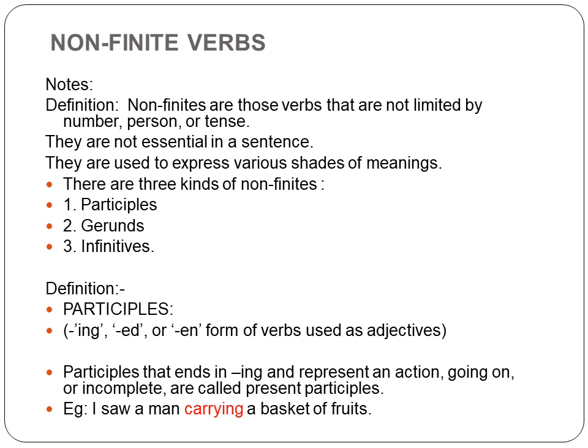What is a participle? A verb which ends with -ed, -ing, or -en is used as an adjective. Participles that end in -ing and represent an action going on or incomplete are called present participles. For example: 'I saw a man carrying a basket of fruits' — here 'carrying' (carry + ing) is a present participle, describing an action being performed by a person.